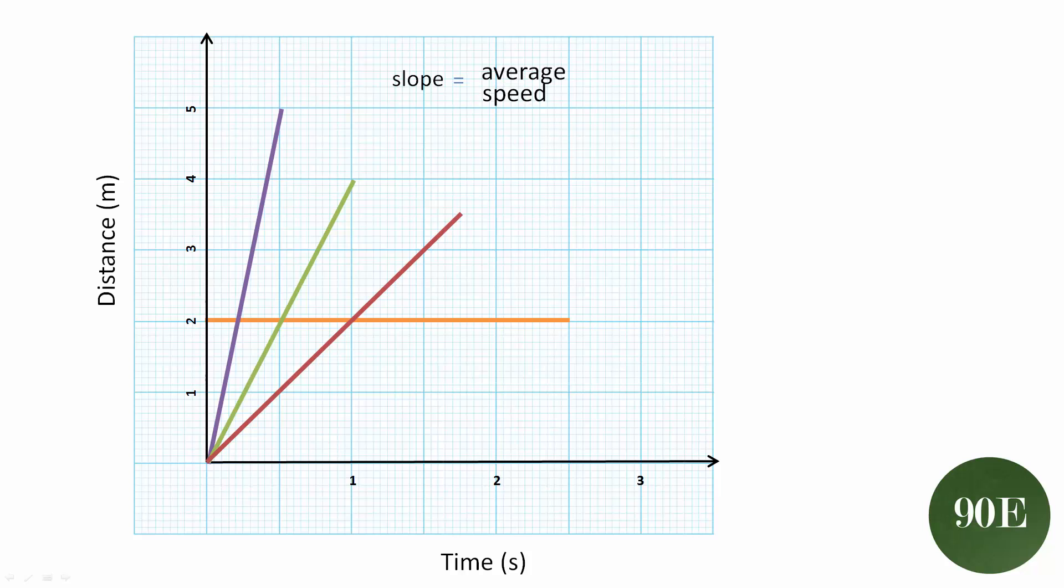The main takeaway from our last video was that the slope of a distance-time graph is the same as the average speed, and the steeper the slope, the faster the average speed. From a glance, we can tell immediately that the average speed of the journey represented by the purple line is faster than any of the other journeys represented here.